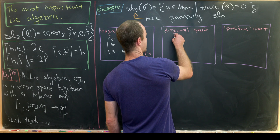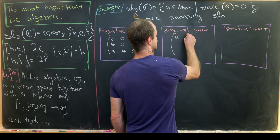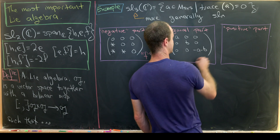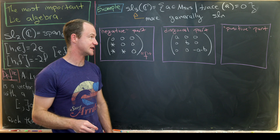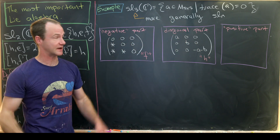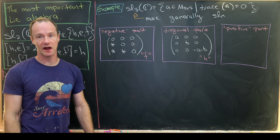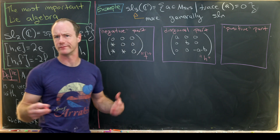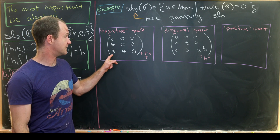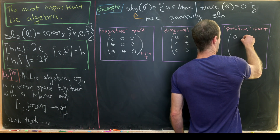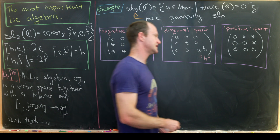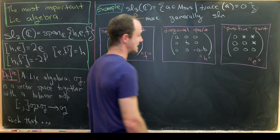The diagonal part consists of diagonal matrices of the form diag(a, b, −a−b), since we need the trace to be zero. These play the role of h, though there are more degrees of freedom here than in SL2 since we have a larger diagonal part. The positive part is just the transpose of the negative part — non-zero entries are allowed only above the diagonal — and these are the generalizations of the vector e.